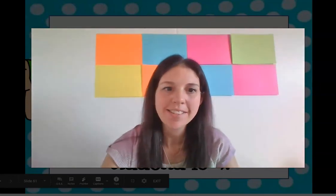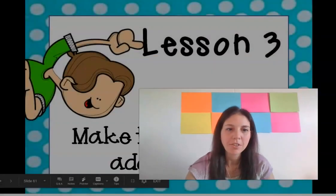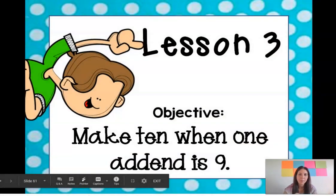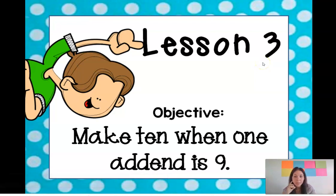Hey first graders, it's Mrs. Daniel from Citizenship Academy. Today let's look at what we're going to do for math. We're on lesson three in module two and our objective for today is to make ten when one addend is nine.